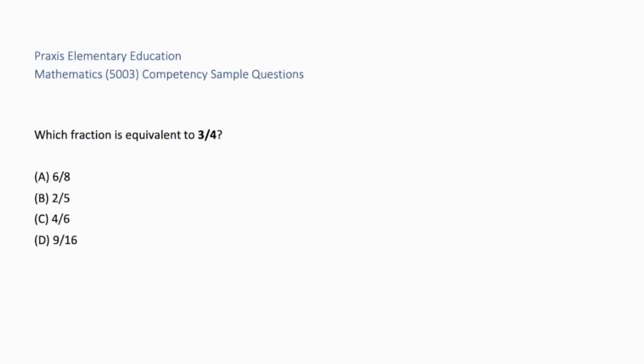Which fraction is equivalent to 3 fourths? A, 6 eighths. B, 2 fifths. C, 4 sixths. Or D, 9 sixteenths. The best way to find an equivalent fraction to 3 fourths is to take 3 fourths and multiply the denominator and the numerator by the same number. 3 times 2 is 6. 4 times 2 is 8. The correct answer is 6 eighths. B is choosing a fraction with a similar denominator. C is an incorrect simplification. D is randomly multiplying the numerator and denominator by different numbers.